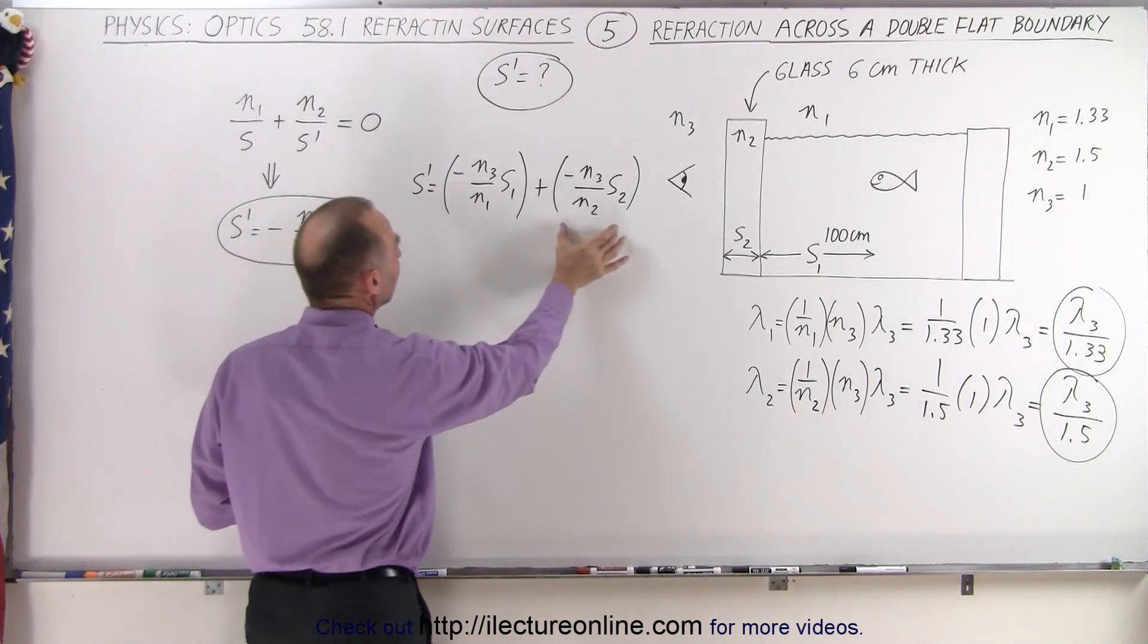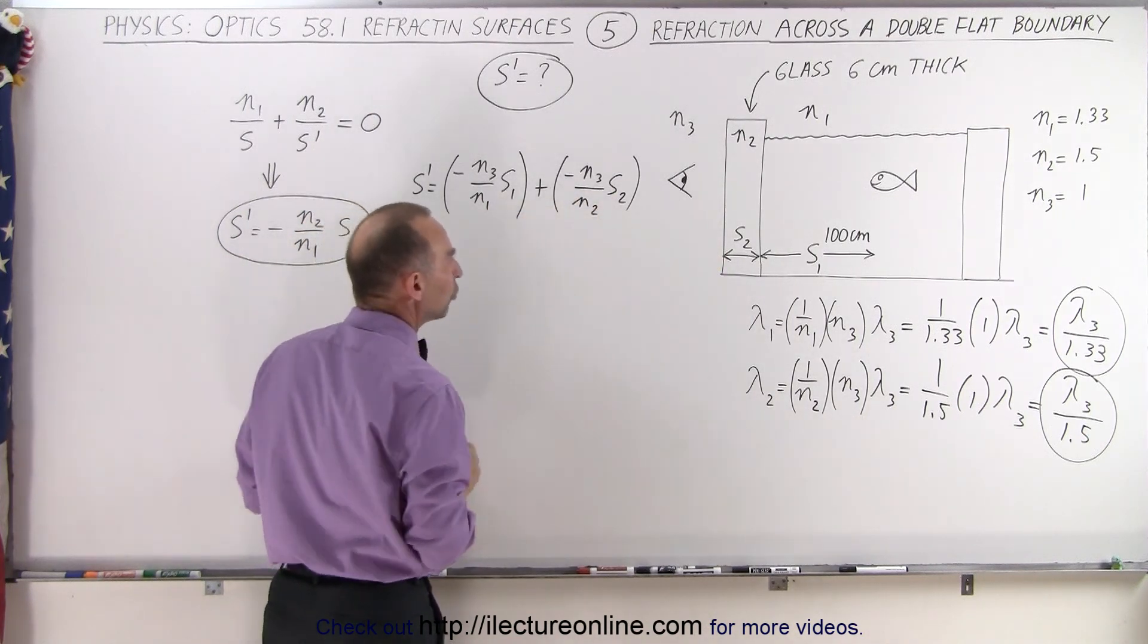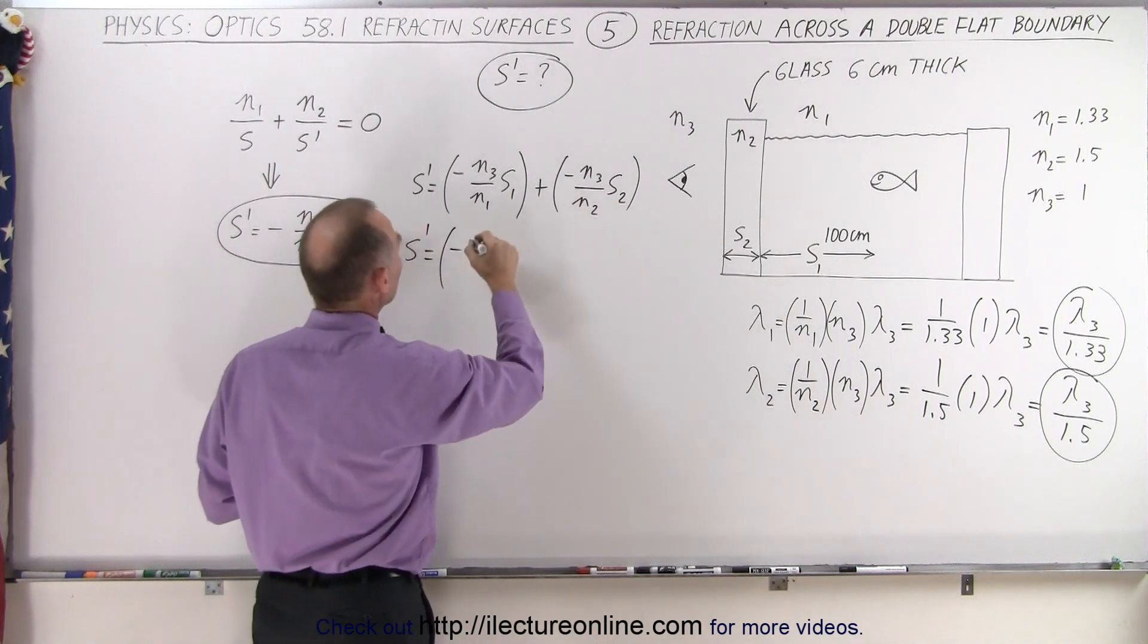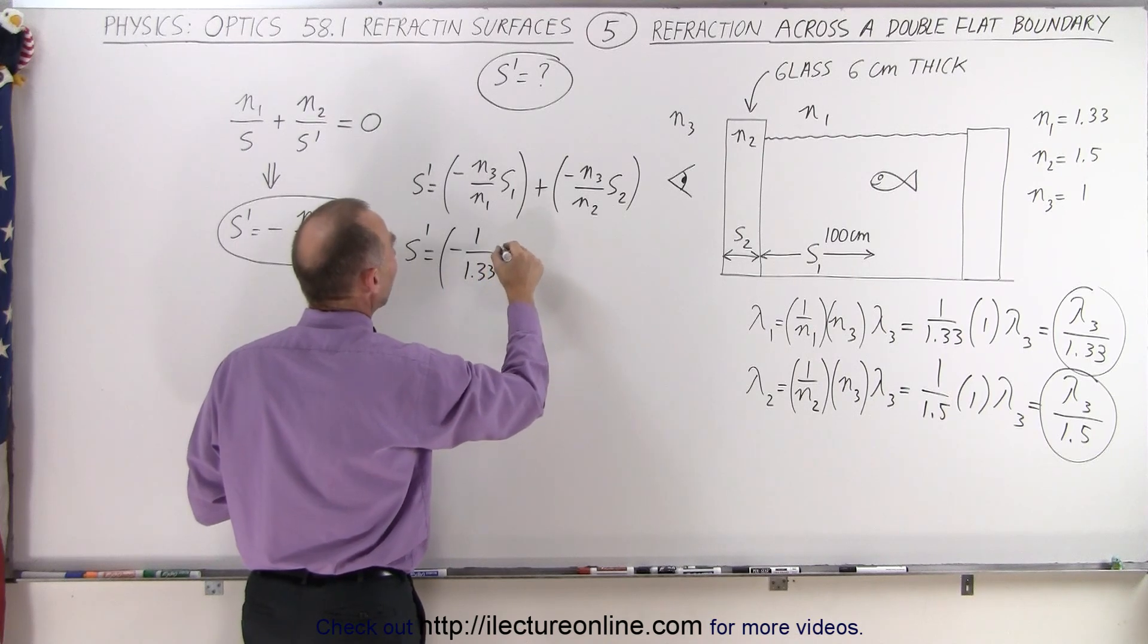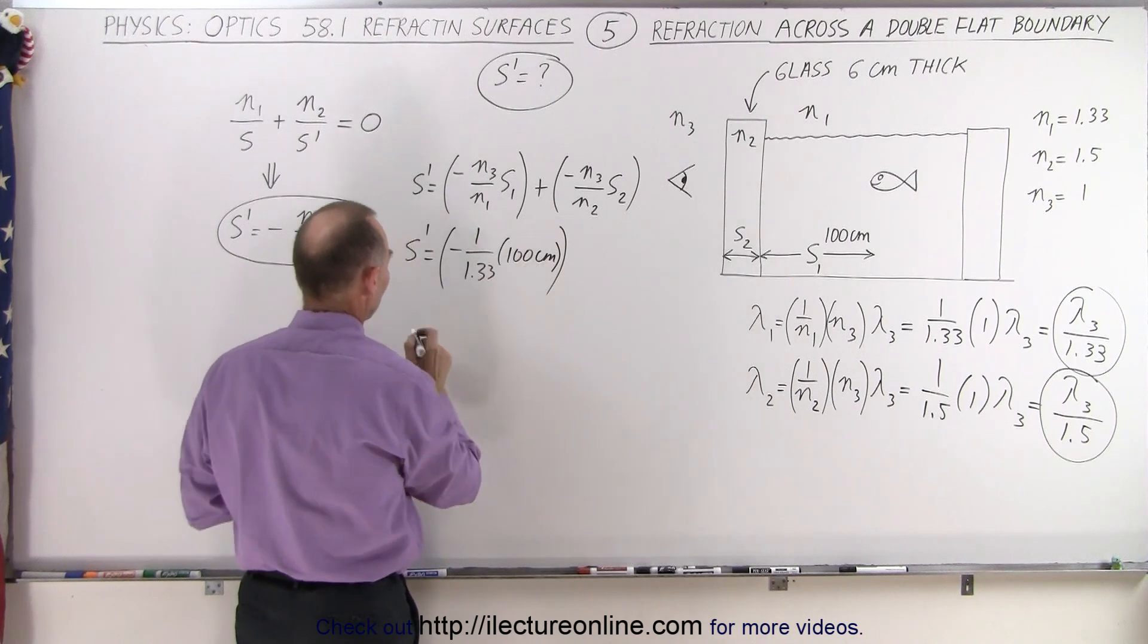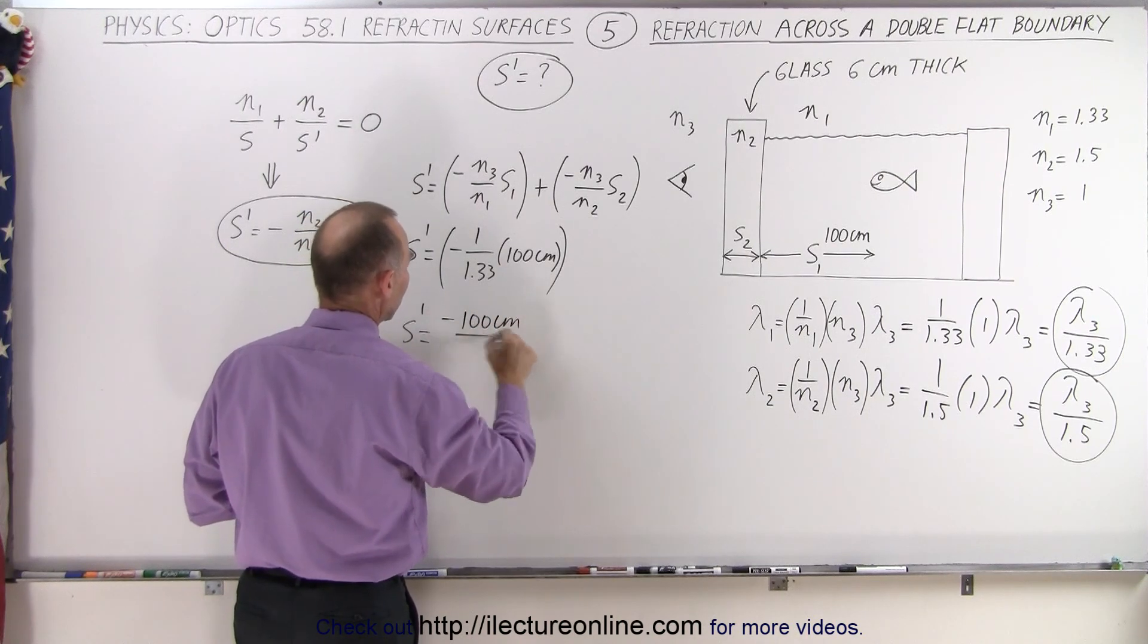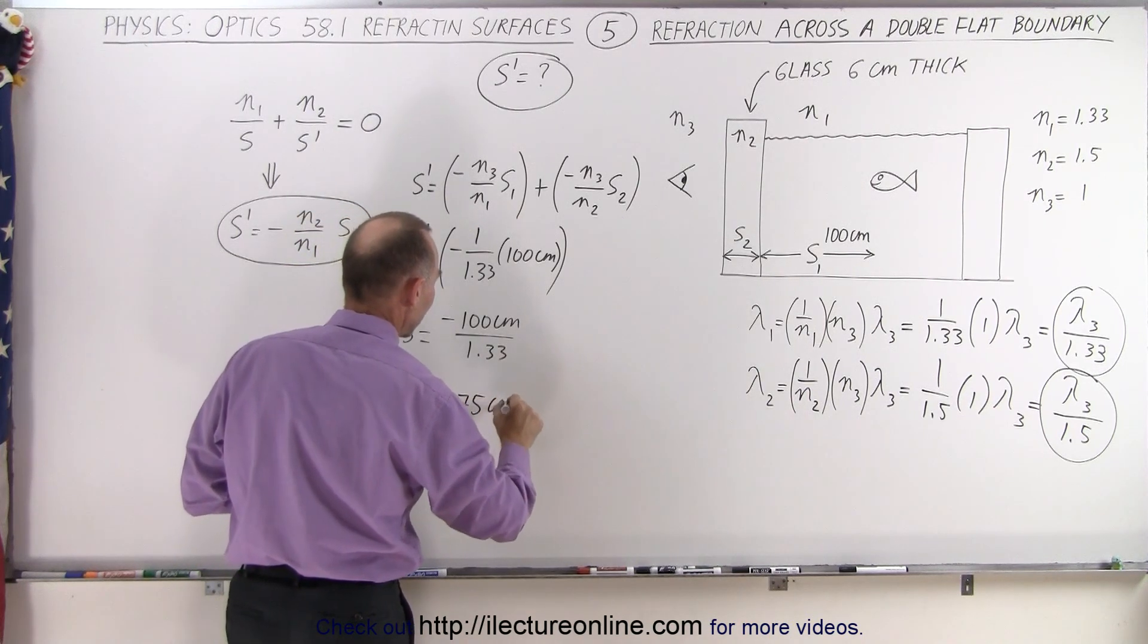So what we need to do here is we need to calculate the distance change due to the water effect and the distance change due to the glass effect. So let's go ahead and calculate this. S prime is equal to minus N3, N3 would be the index of refraction of air, divided by N1, which is the index of refraction of the water, times the 100 centimeters like this, and we're going to take this further. So this is S prime is equal to minus 100 centimeters divided by 1.33.